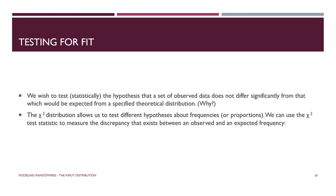We have collected data, organized and graphed it into a histogram to get a picture and compare it to known theoretical probability distributions. We pick one and test whether our data can be said to have come from that distribution. The null hypothesis H0 is that our data does not differ significantly from the theoretical distribution. If we reject H0, we accept H1 — that the data is different and doesn't fit.